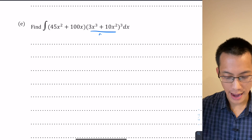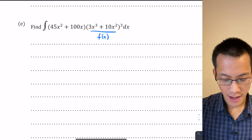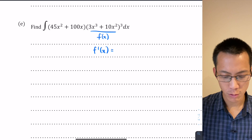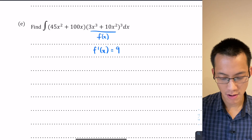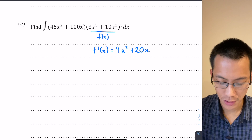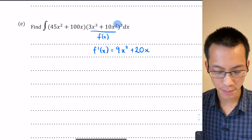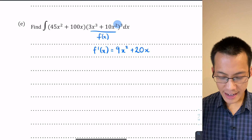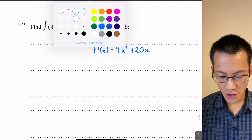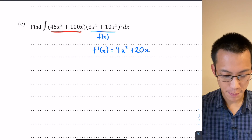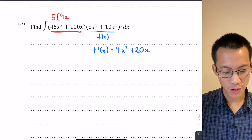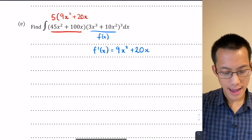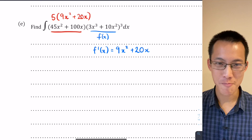Let's clean that up and see the connection more clearly. I want you to consider 3x³ + 10x² as f(x). If that were f(x), then f'(x) would equal — think carefully — bring the power down: 3 becomes 9x², reducing the index by 1, and then the second term gives 20x, because I brought the index 2 down and multiplied by 10. So f'(x) = 9x² + 20x. That's not equivalent to 45x² + 100x, but it's close — if I take out a factor of 5, lo and behold I get 5(9x² + 20x).